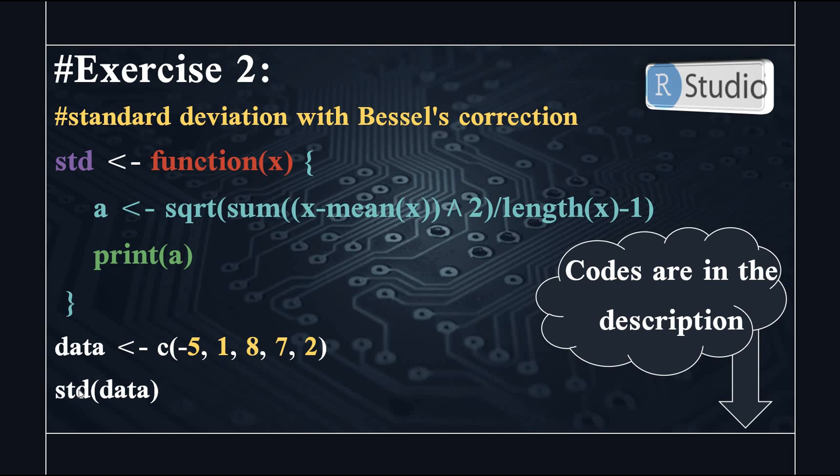So if we have a closer look at this equation, we use square root function, sum function, mean function, and length function. So if you know how to calculate the standard deviation on paper, you can just transfer that into R language to create your code.